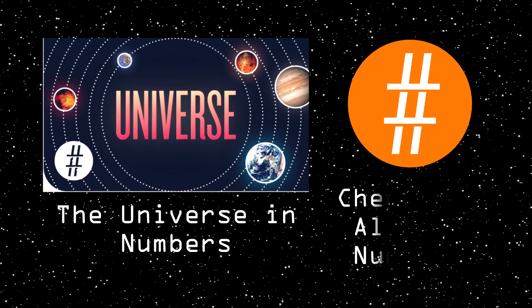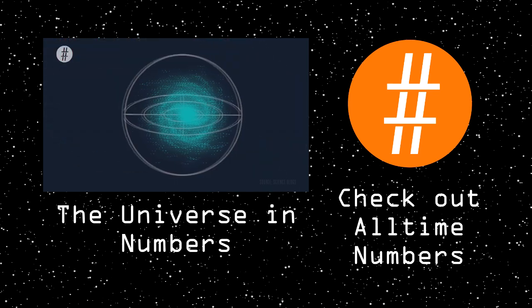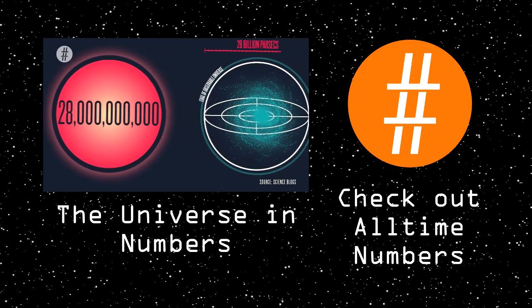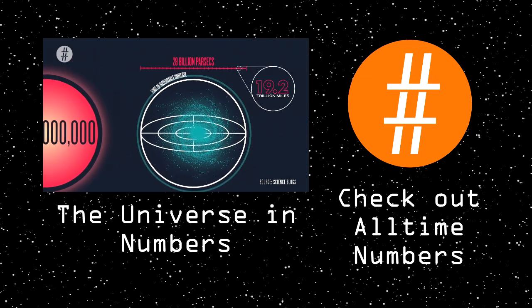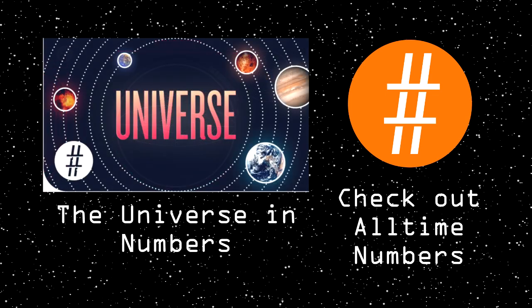This video was made as a collaboration with all-time numbers. Check out this stunningly awesome video of theirs, the Universe in Numbers, by clicking on this preview or on their logo to go to their channel. Discover the Universe in Numbers. The diameter of the observable Universe is 28 billion parsecs. A parsec is equivalent to 19.2 trillion miles, which is roughly the size of our solar system.